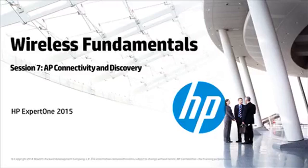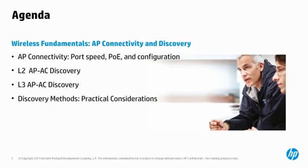Welcome to Wireless Fundamentals, Session 7: AP Connectivity and Discovery. During our previous discussion about configuration, you learned that APs can use Layer 2 discovery mechanisms to find and access a controller, or they can use Layer 3 mechanisms. Let's explore AP connectivity in more detail and learn more about how APs discover available access controllers.